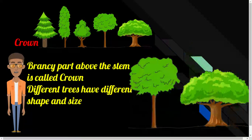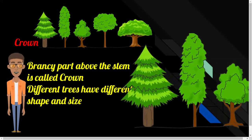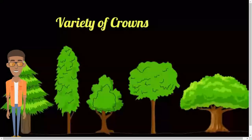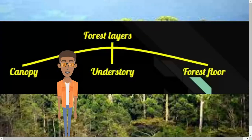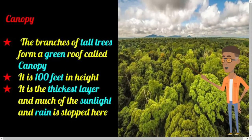The branchy part of a tree above the trunk is known as the crown of the tree. Different trees have crowns of different shape and size. Due to the presence of vegetation of different heights and different types of crowns, several horizontal layers are created in the forest. These layers are divided into canopy, understory, and forest floor. In the canopy layer, trees may be as tall as 100 feet; the branches of these tall trees form a green roof over other plants — this is known as the canopy.